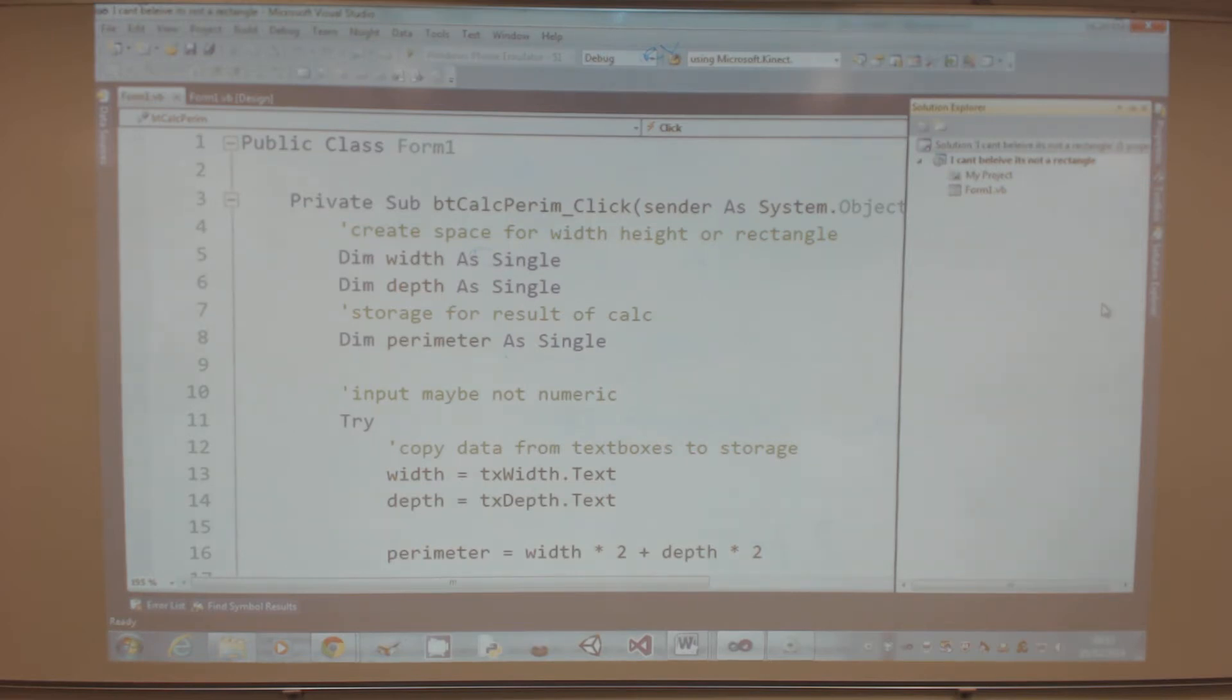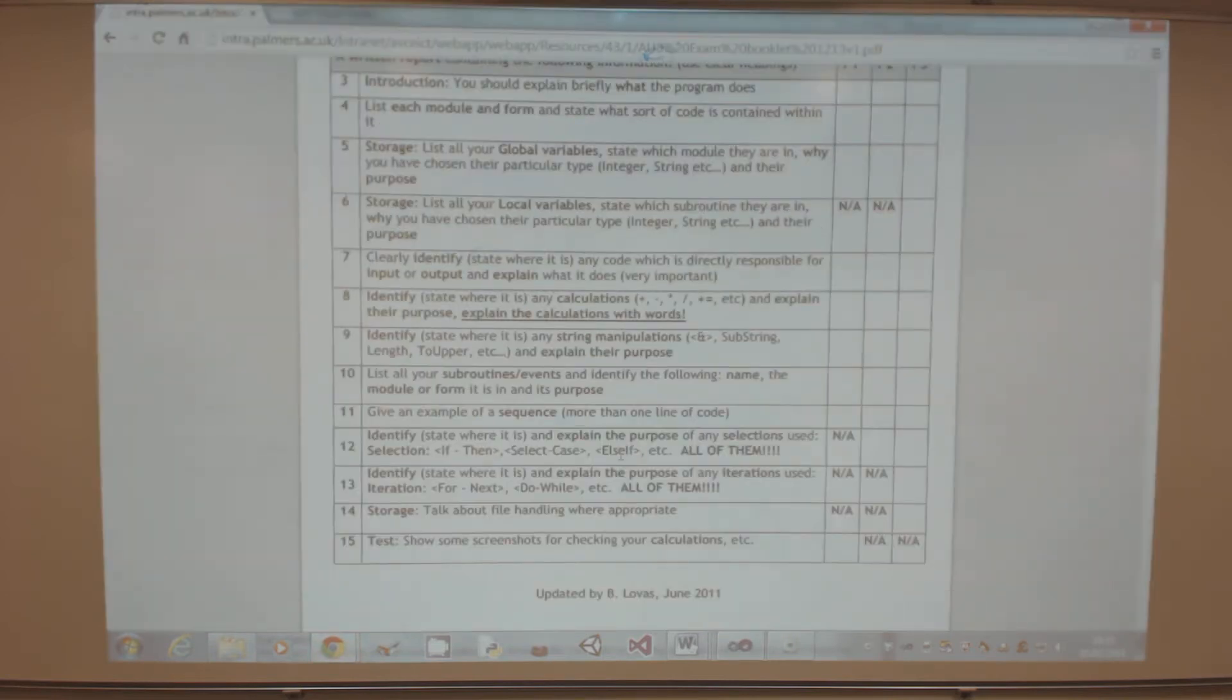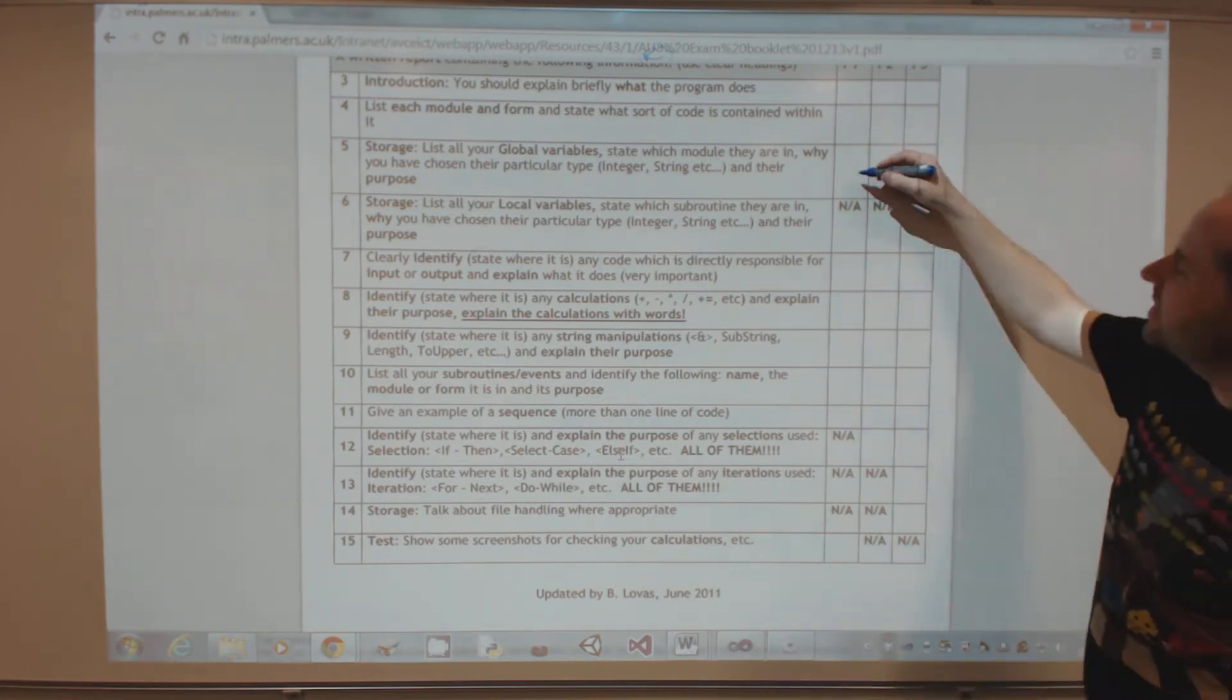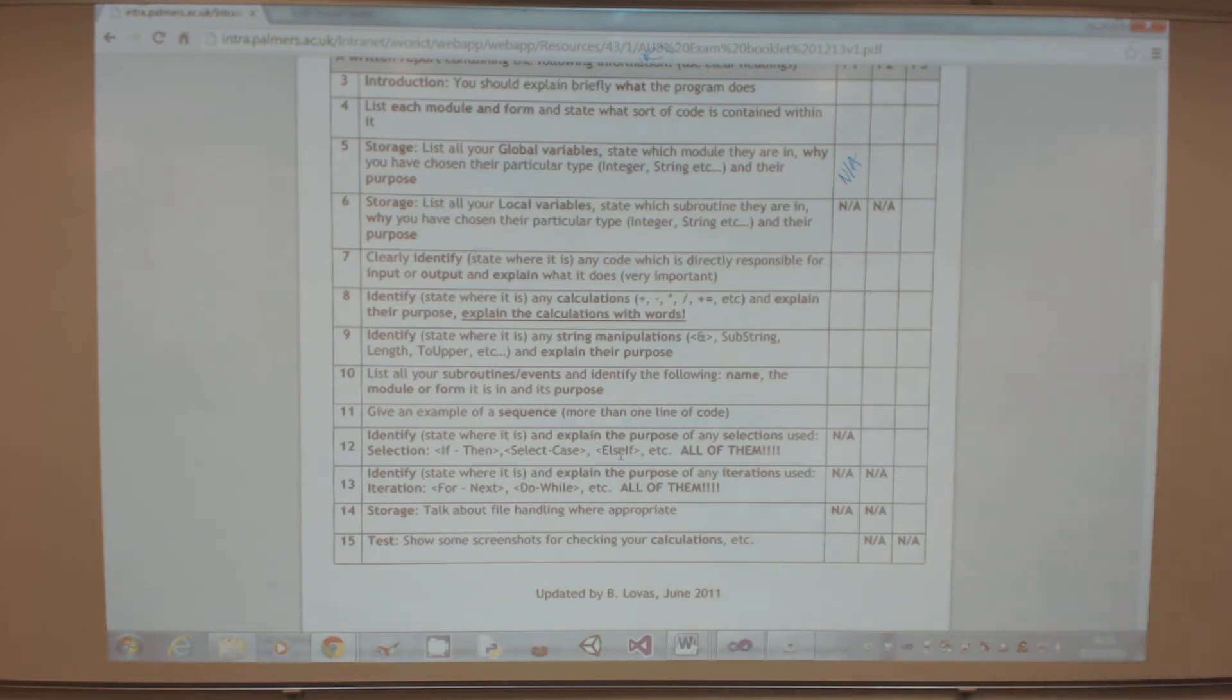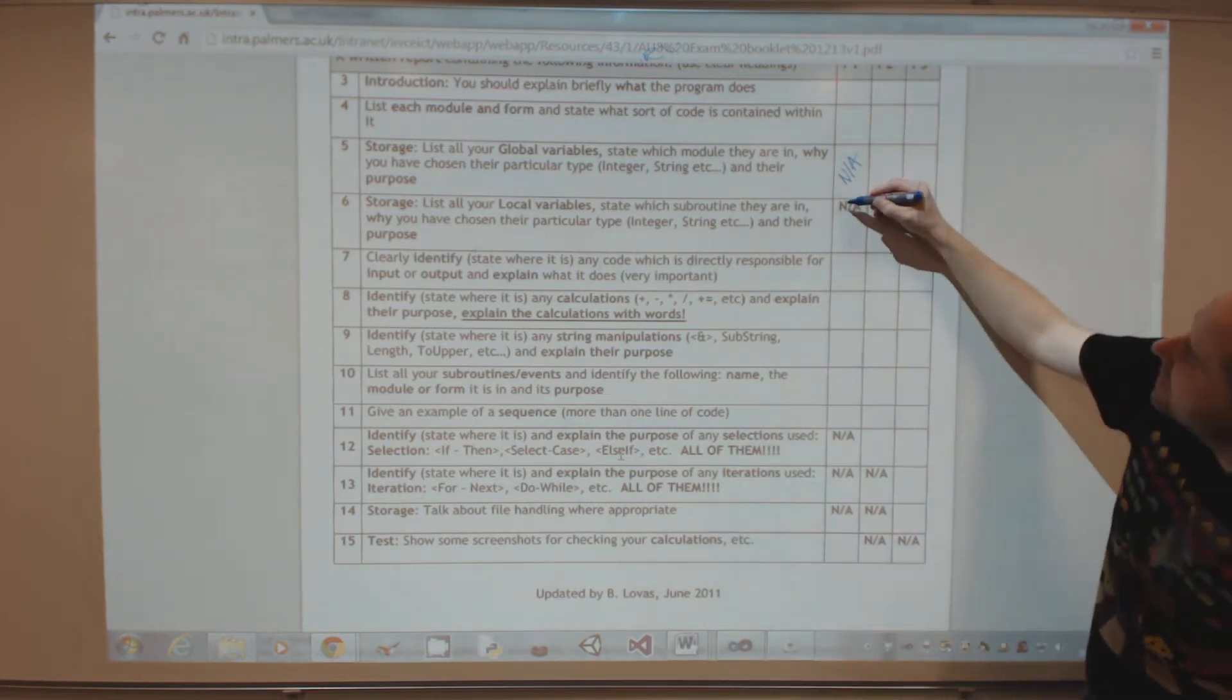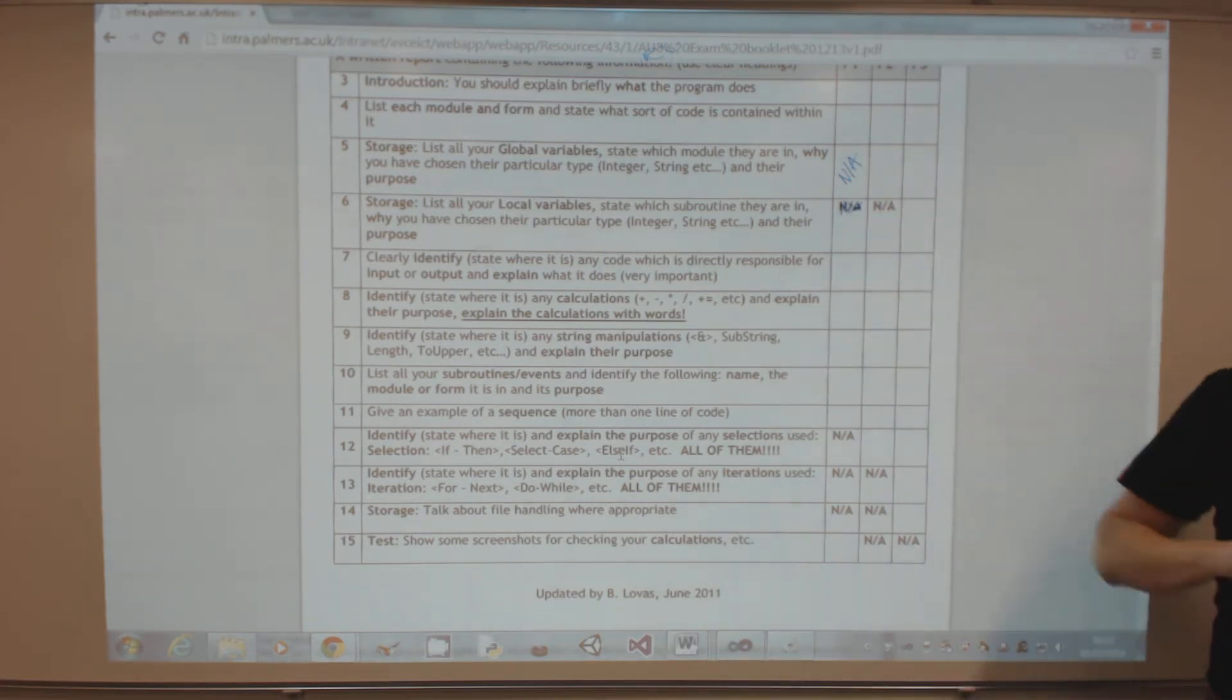The next thing says global variables. Now on your sheet this hasn't got anything in it. On your sheet, put that you haven't got any global variables. On your sheet, N/A that, and on the next one, number six, scribble out.